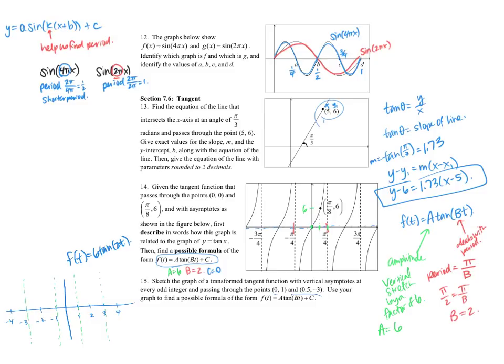And it needs to contain the points 0, 1 and 0.5, negative 3. So it's doing something like this. The first thing I will notice is that my axis here has been shifted up one unit, so that tells me that c is equal to 1. And the other thing is I know my period is 2.